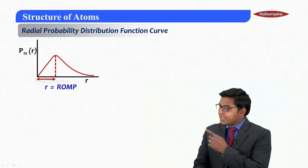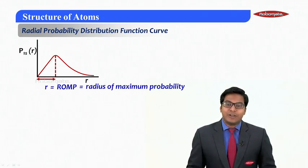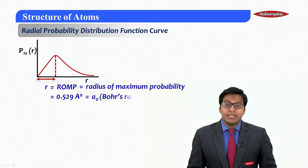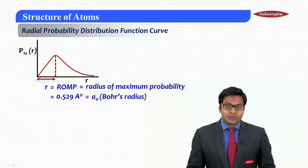Now here you could see it is reaching at a maximum value and that maximum value is what we call the radius of maximum probability, and that is found to be 0.529 angstrom, which is exactly the same what Bohr calculated.